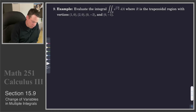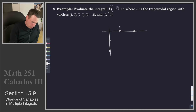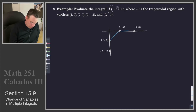We'll start with our trapezoidal region. Here's the region we want to integrate over. The vertices are at (1, 0), (2, 0), (0, -1), and (0, -2), and that's our region.